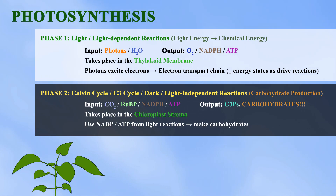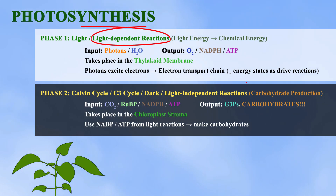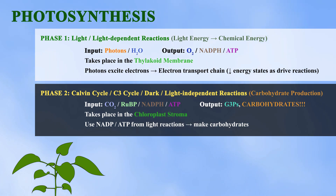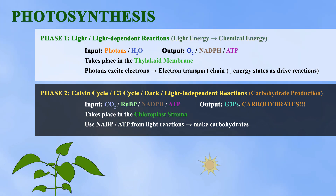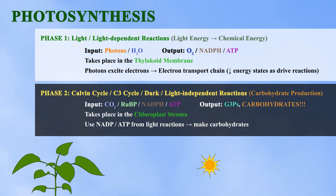Photosynthesis has two phases: the light-dependent and light-independent reactions. The light-dependent reactions convert light energy into chemical energy, taking in photons and water and producing oxygen, as well as high-energy NADPH and ATP.